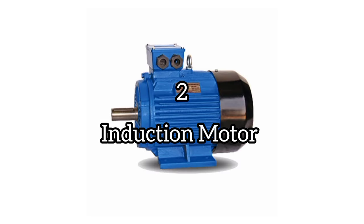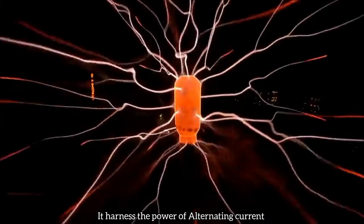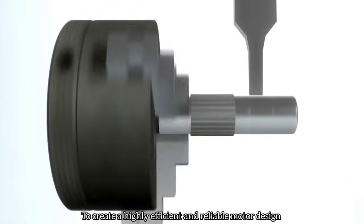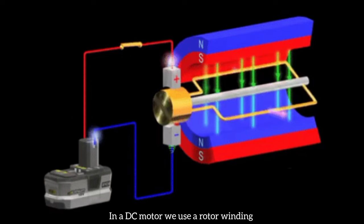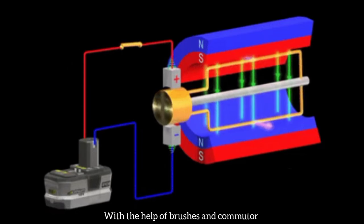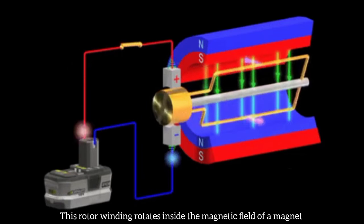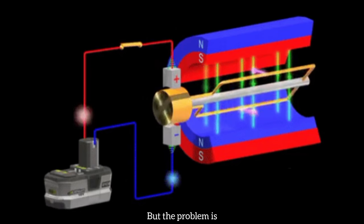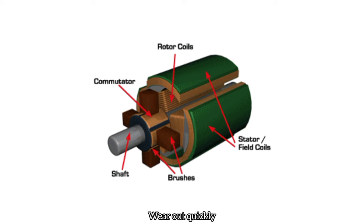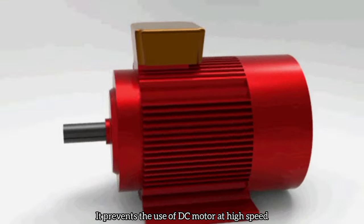Another groundbreaking invention by Tesla was the induction motor. It harnesses the power of alternating current to create a highly efficient and reliable motor design. In DC motor, we use a rotor winding that is connected to an electrical supply with the help of brushes and commutators. Rotor winding rotates inside the magnetic field of a permanent magnet. But the problem is, at high rpm, these brushes and commutators wear out quickly and we have to replace it frequently. It prevents the use of DC motor at high speed.